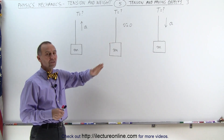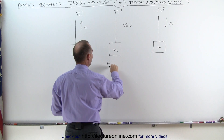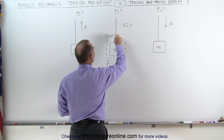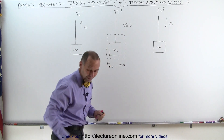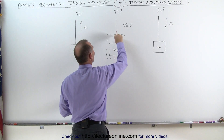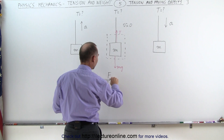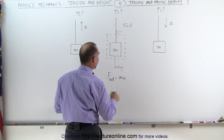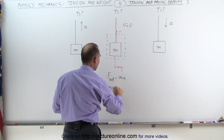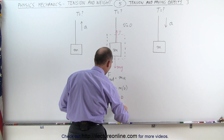Let's start with the middle situation: the velocity is zero and the object is simply hanging there, not moving. Using Newton's second law, the net force on the object must equal mass times acceleration. Drawing a free body diagram, we see the force of gravity pulling downward — the weight mg — and the tension in the cable pulling upward. Since acceleration is zero, tension minus weight equals zero, meaning the tension equals the weight.